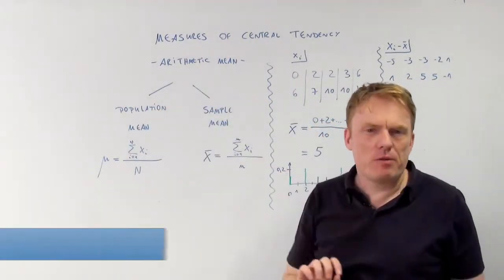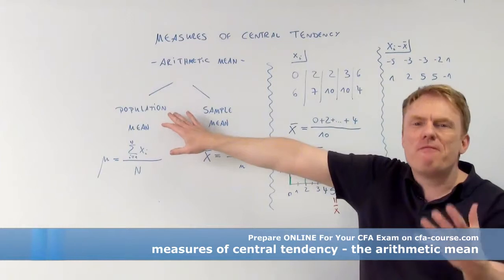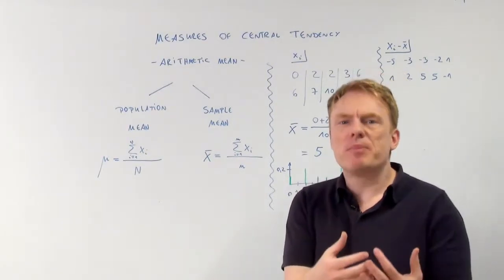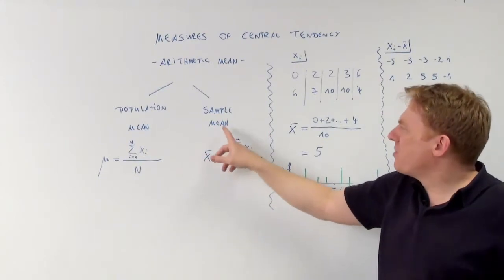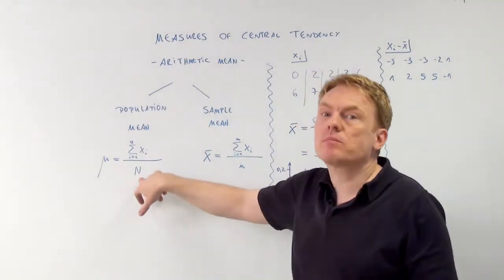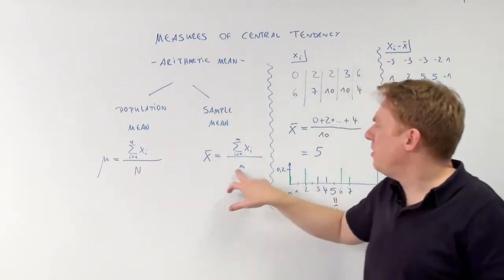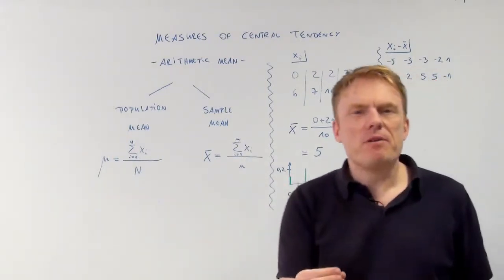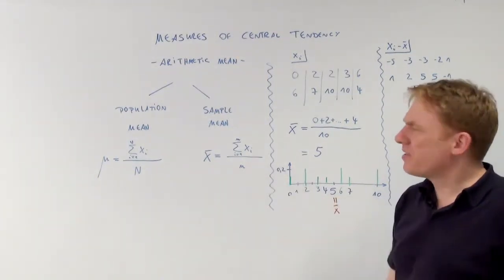There are two types of arithmetic mean: population mean and sample mean. It just depends on how many values you observe. If you observe every possible value, then you take the population mean. If you just take a sample out of the population, it's the sample mean. The difference is here you take capital N, the number of values included in the population, and here you just take the number of values involved in the sample.